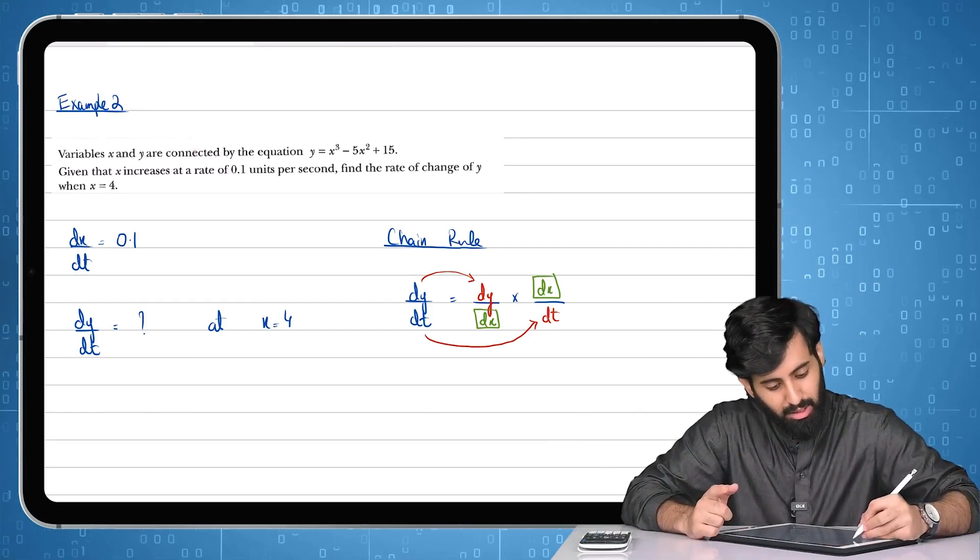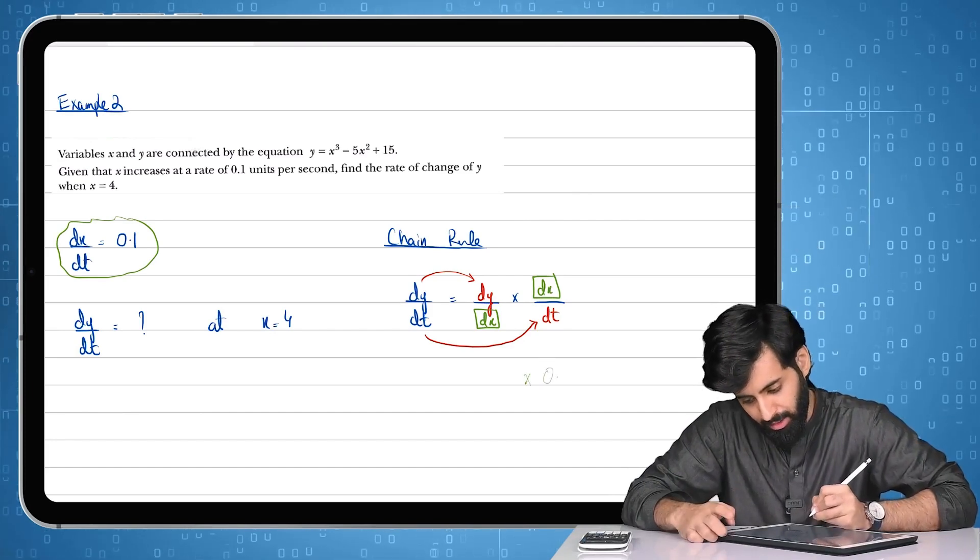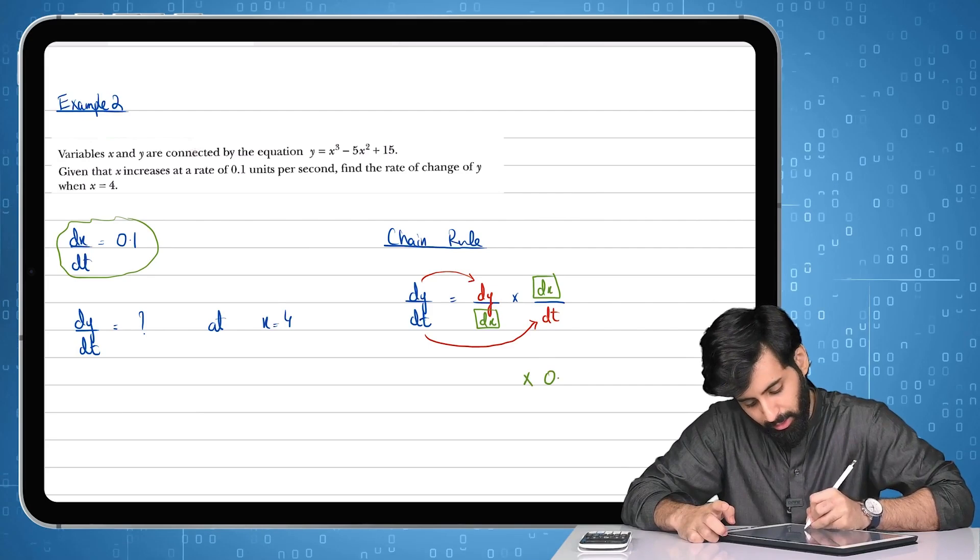One thing that we have right away is dx/dt, which is 0.1, so I'm going to use that. Let me write times 0.1 here.